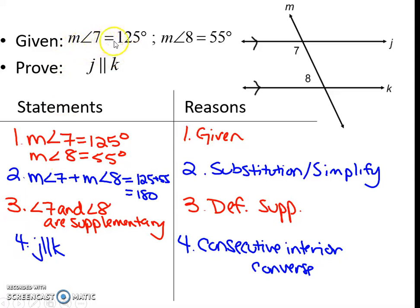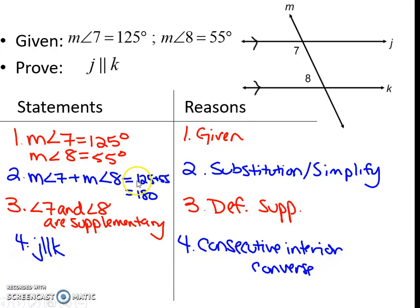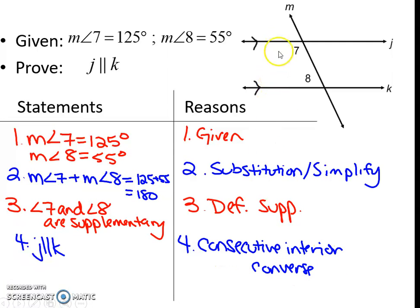The next proof: measurement of angle 7 is 125, measurement of angle 8 is 55. Prove that J and K are parallel. Number 1: measurement angle 7 is 125, measurement angle 8 is 55 — given. Number 2: measurement angle 7 plus measurement angle 8 equals 180, since 125 plus 55 is 180 — substitution or simplify. Number 3: angle 7 and angle 8 are supplementary — definition of supplementary angles. Therefore J and K are parallel because of the consecutive interior angles converse.